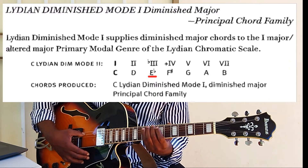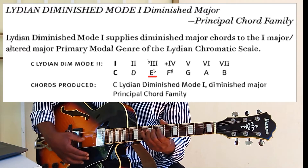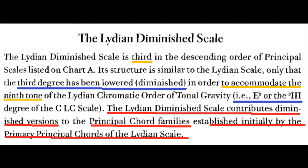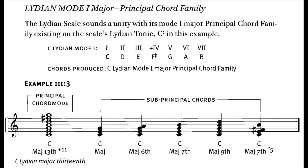The last line talks about the chords. I quote: "The Lydian Diminished Scale contributes diminished versions of the principal chord families established initially by the primary principal chords of the Lydian scale." Sounds complicated, but it's really simple. It means that the Lydian Diminished contributes diminished versions of the chords which belong to the Lydian scale itself.